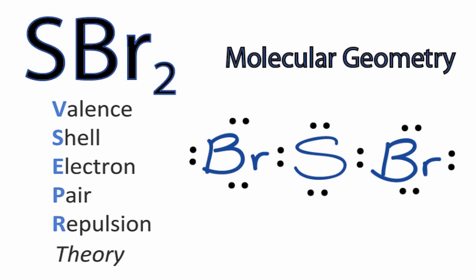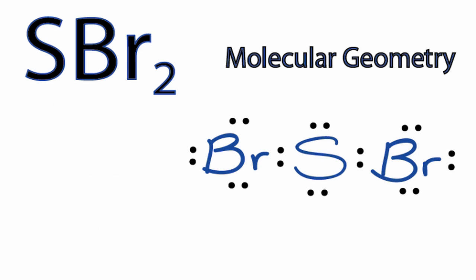So according to valence shell electron pair repulsion theory, the two bromines will spread out, as will those two non-bonding pair of electrons. So we're not going to have a simple linear molecule here.